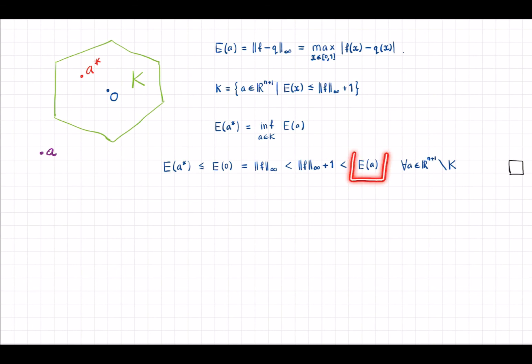So we have E evaluated at a star is smaller than E evaluated at a if a is outside the set K. And we also know it is true even if a is inside the set K. So that proves that a star is a global minimizer.